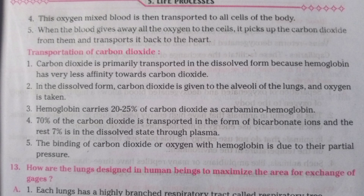Regarding transportation of carbon dioxide: carbon dioxide is primarily transported in the dissolved form because hemoglobin has very little affinity towards carbon dioxide. In the dissolved form, carbon dioxide is given to the alveoli of the lungs and oxygen is taken in. Hemoglobin carries 20–25% of carbon dioxide as carbaminohemoglobin. 70% of the carbon dioxide is transported in the form of bicarbonate ions and the remaining 7% is in the dissolved state through plasma. The binding of carbon dioxide or oxygen with hemoglobin is due to their partial pressure.